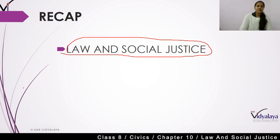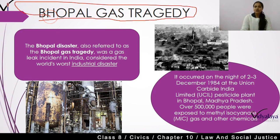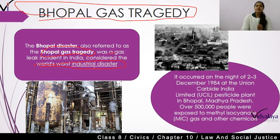Now let's move on to our next topic. Today's topic is the Bhopal gas tragedy. This is a very important issue that occurred in our country. The Bhopal disaster, also referred to as the Bhopal gas tragedy, was a gas leak incident in India, considered the world's worst industrial disaster. So in our country there was such a disaster — it was a gas leak incident — and it was the worst industrial disaster in the world.